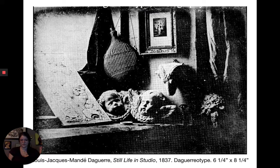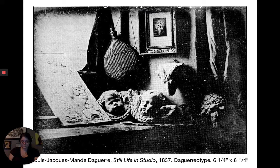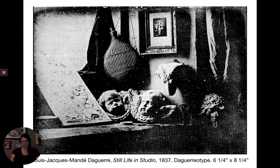On January 7th, 1839, the daguerreotype was presented at the Academy of Science in Paris, and people worldwide gained access to it. As for the terminology: 'daguerreotype' comes from Daguerre; 'camera' is shortened from 'camera obscura'; and 'photography' comes from two Greek words — 'photos,' meaning light, and 'graphos,' meaning drawing or writing — so photography literally means 'mark-making with light.'